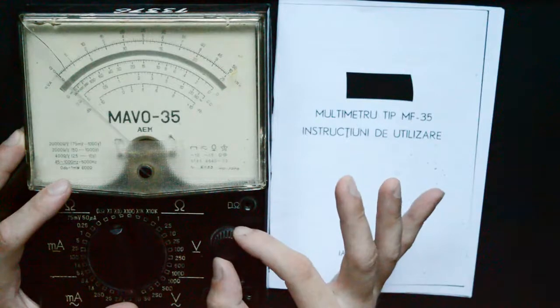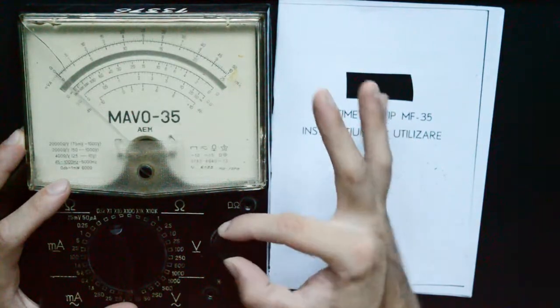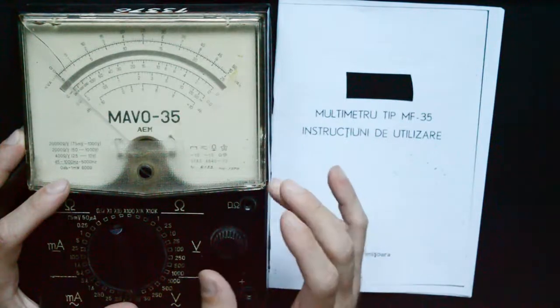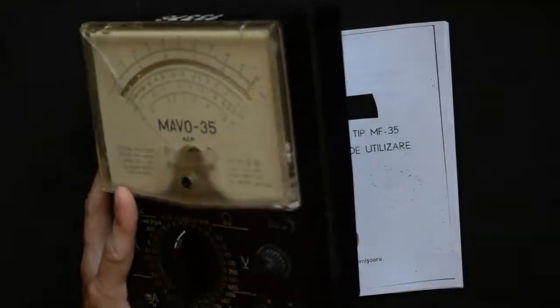But there is still a secondary knob used for tuning the ohmmeter. Depending on how full the battery is, this will be used to calibrate the full scale. Okay, finally, let's look at the back.